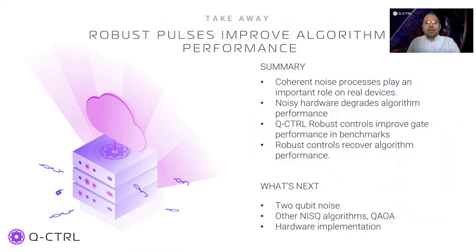In summary, we have shown that coherent noise processes play an important role on realistic devices and hinder algorithmic performance. The Q-Control optimizer can create pulses which are robust to such noise and boost the performance of NISQ era algorithms. In future, we want to enhance our simulation to also accurately capture the two-qubit noise processes, and we will also work towards reproducing these results directly on an actual hardware device.